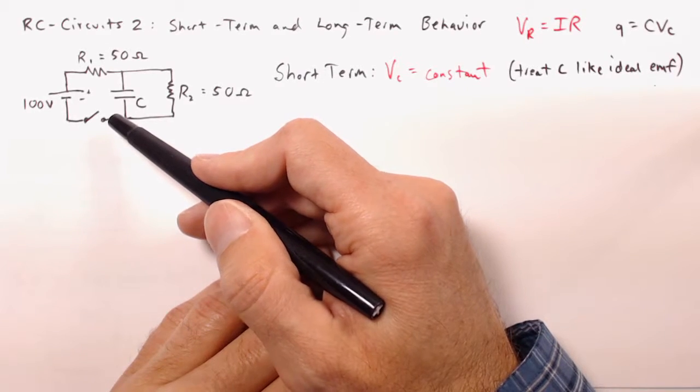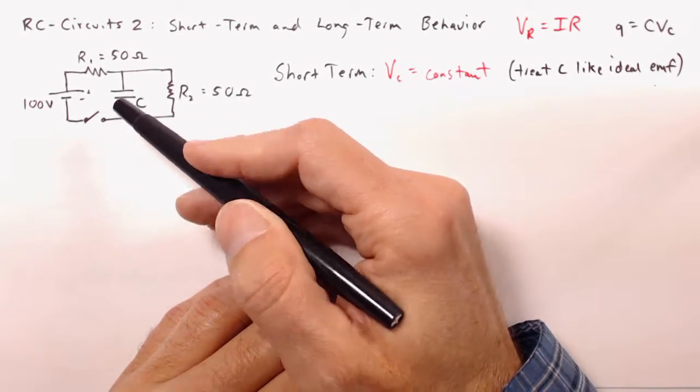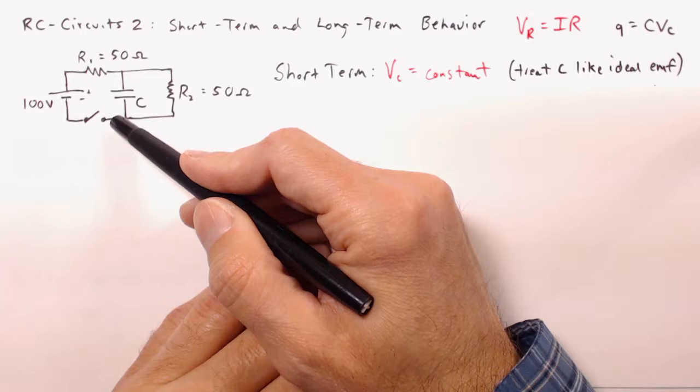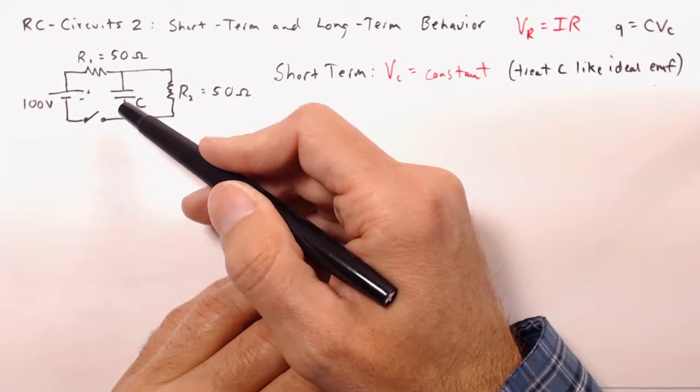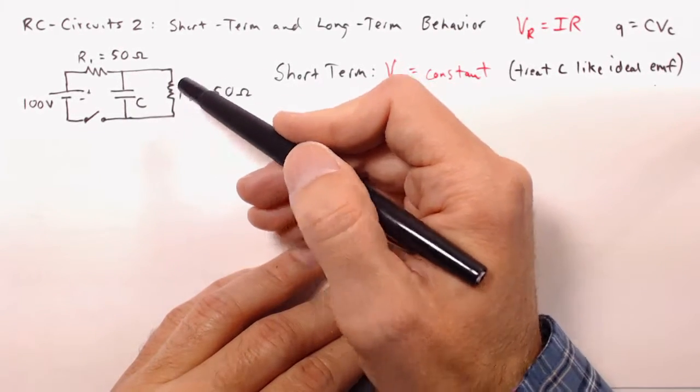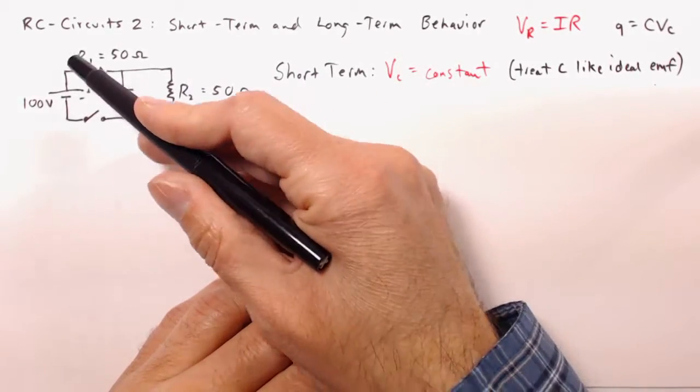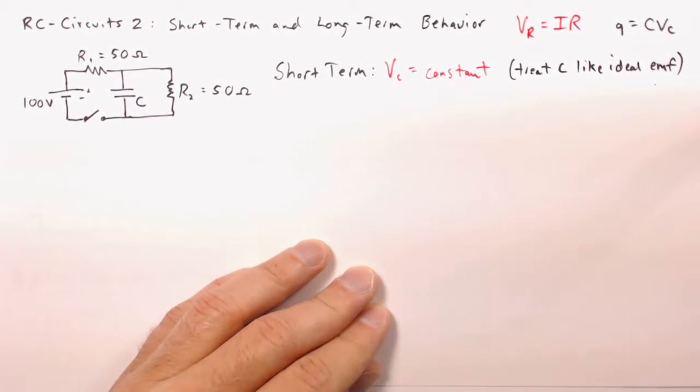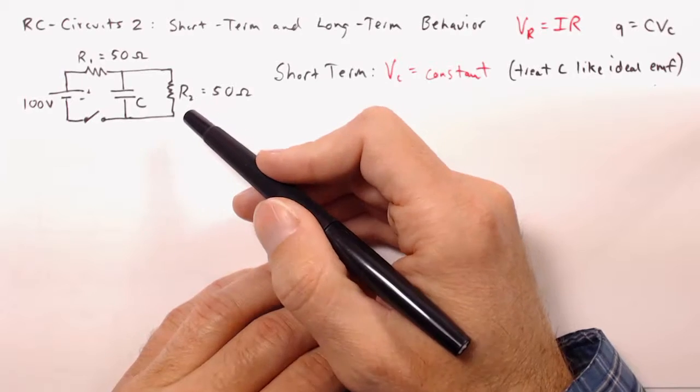So we close the switch, say in this case, and then for the first millisecond or two after that switch is closed, what is going to be going on with the circuit? What's the voltage? What's the current in the various elements throughout this circuit? How do we determine those things?